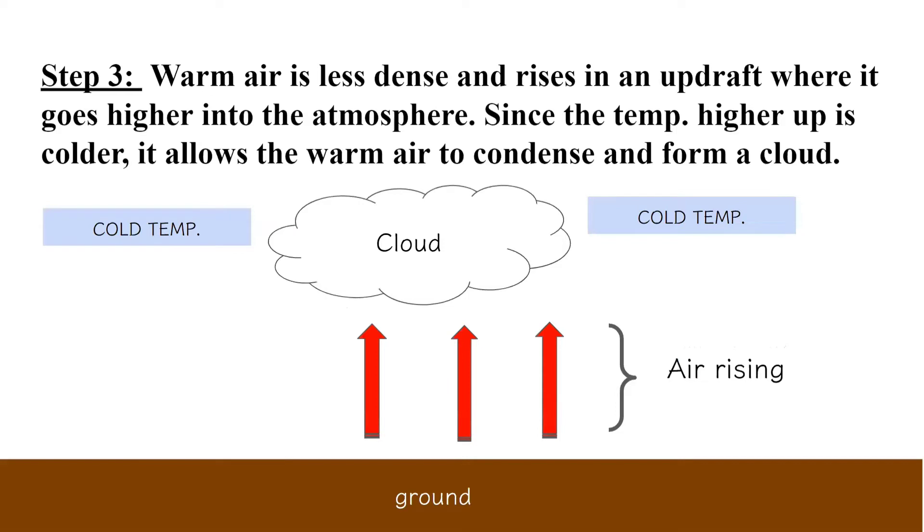Step three: Warm air is less dense and rises in an updraft where it goes higher into the atmosphere. Since the temperature higher up is colder, it allows the warm air to condense and form a cloud.